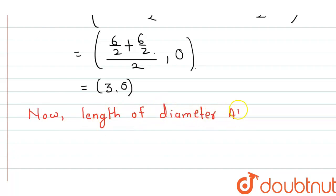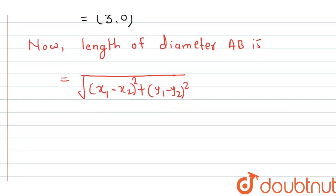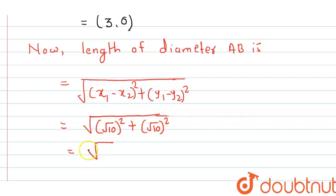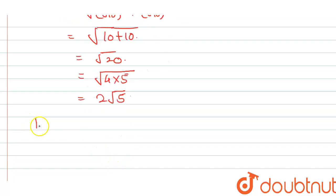The length of diameter AB is √((x₁ - x₂)² + (y₁ - y₂)²). Substituting values, we get √((√10)² + (√10)²) = √(10 + 10) = √20 = 2√5. Therefore the radius is √5.